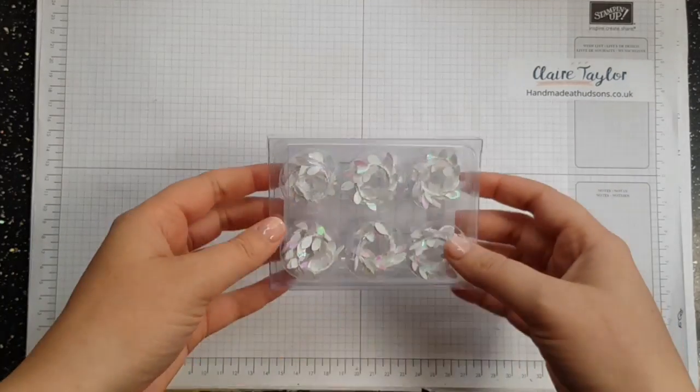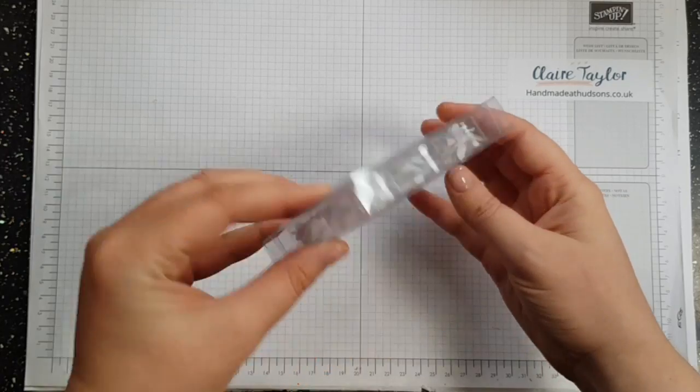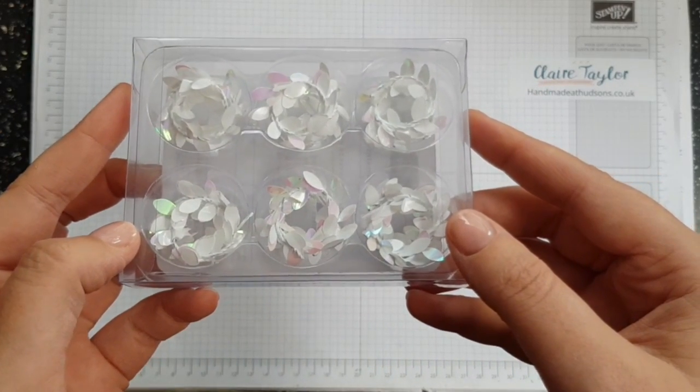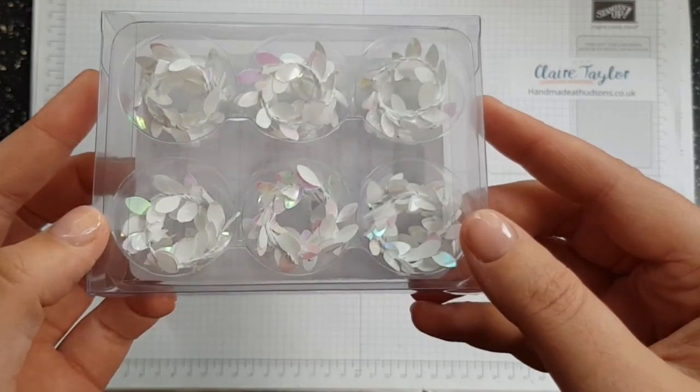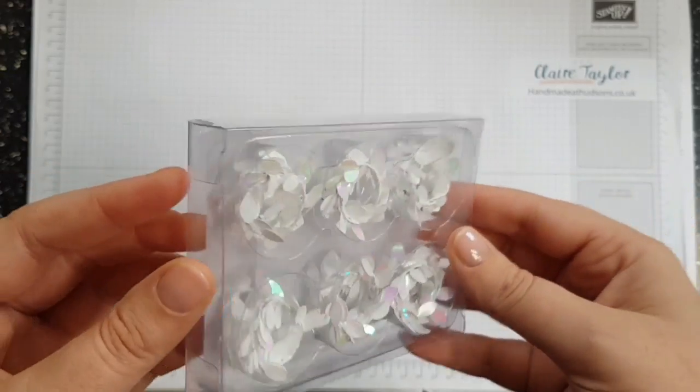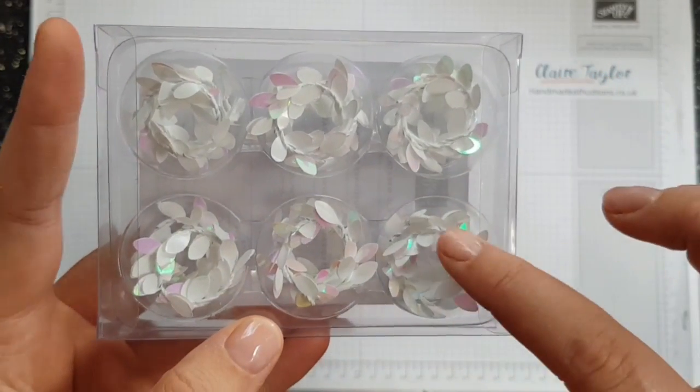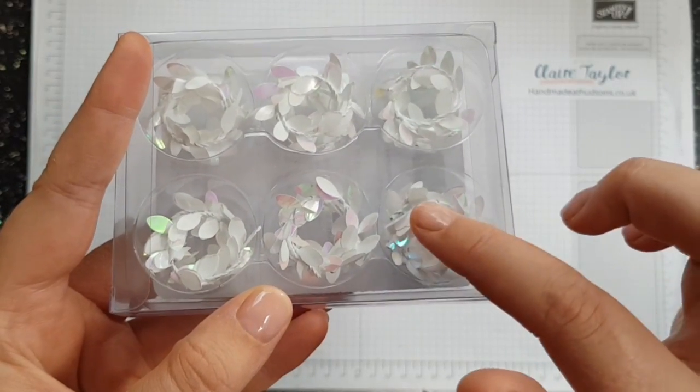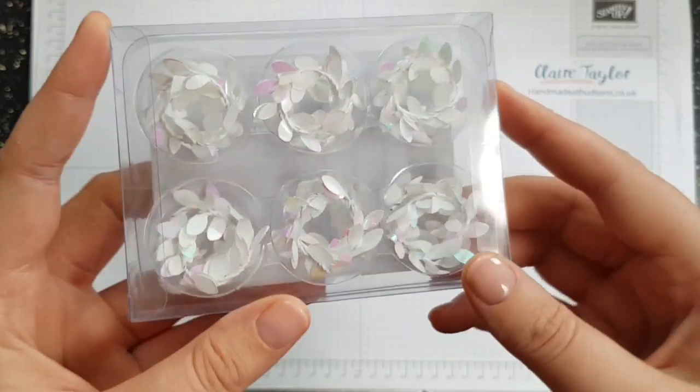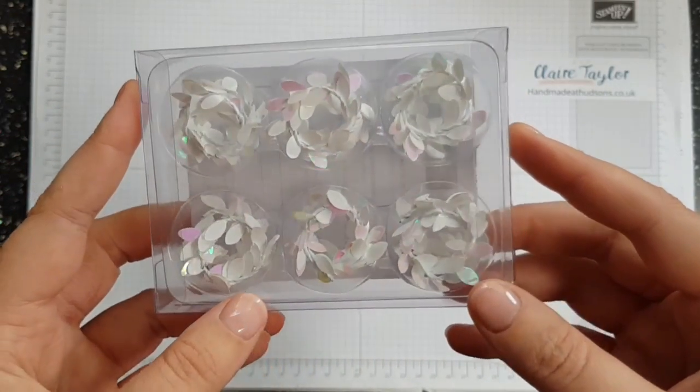This is the first thing that I've got, the iridescent boxwood wreaths embellishments. These are from the frosted floral suite. I've seen these in the annual catalog but they're really, I think they're in garden green. You can keep them as they are or you can unravel them and they're absolutely gorgeous. I'm so excited about using these in my cards and I will give you some examples probably later this week, next week.